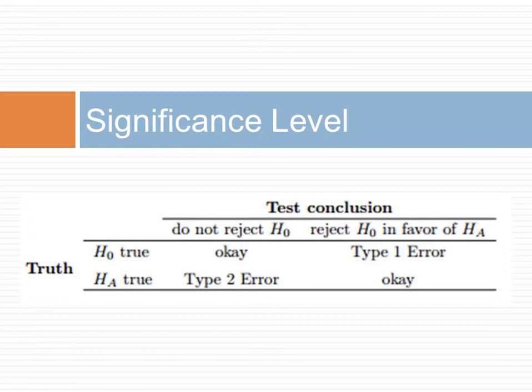If a type 2 error is relatively more dangerous or much more costly than a type 1 error, then we should choose a higher significance level. Here, we want to be cautious about failing to reject the null hypothesis when the null is actually false.